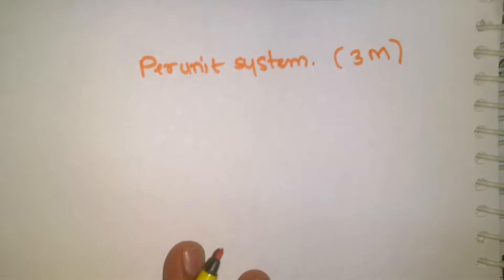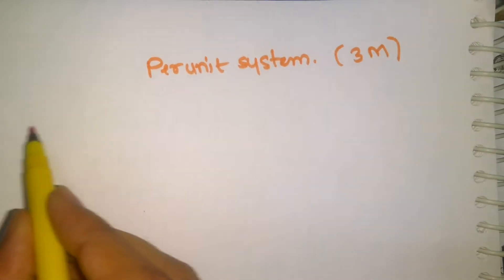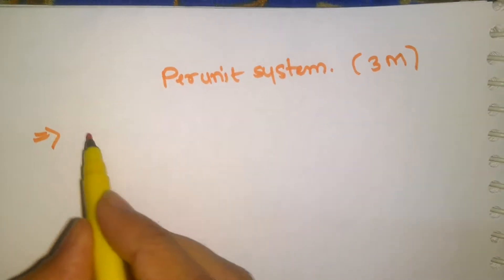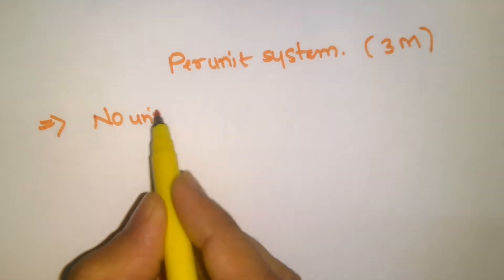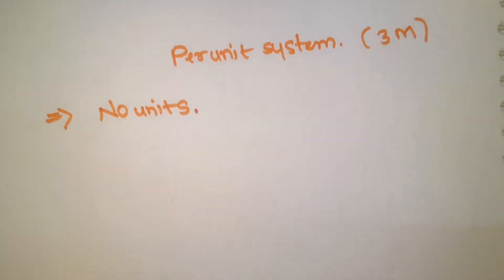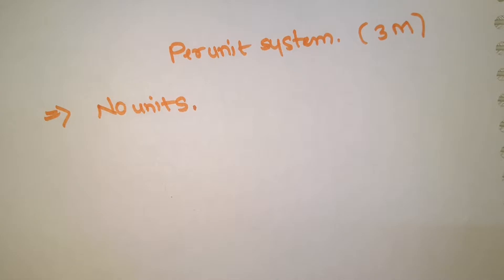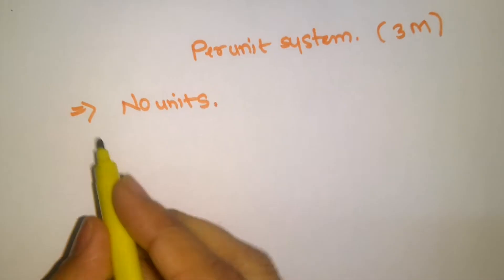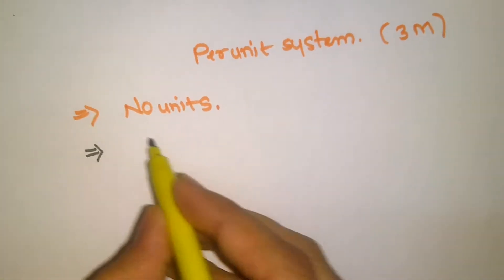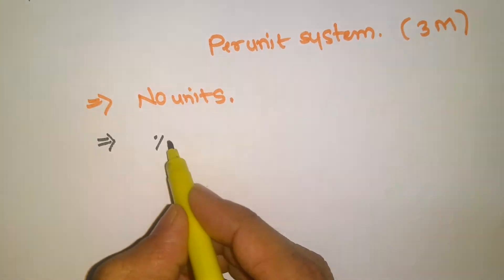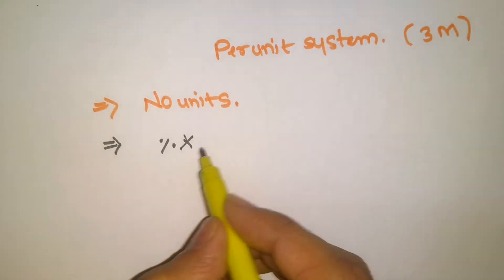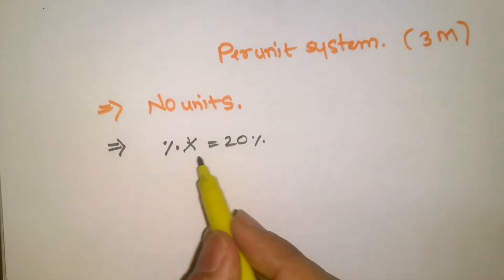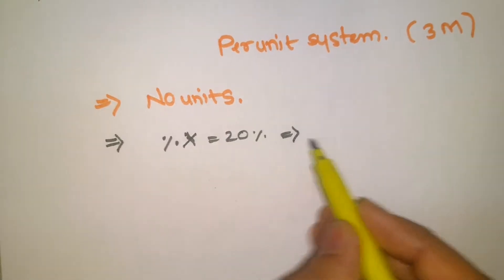I want to discuss the topics of per unit system. What is the per unit system? In the per unit system we don't mention any units — no units will be mentioned — because in the actual system we have units, but in the per unit system we don't. For example, percentage of impedance will be given like 20%.